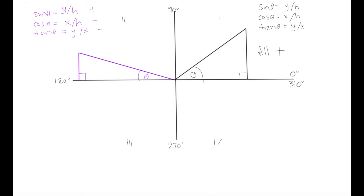So in quadrant 2, only sin theta is positive. It's worth noting that we also have three other trig functions — cosecant, secant, and cotangent. If sin theta is positive, cosecant theta, which is its reciprocal, is also positive. If cos and tan are negative, their reciprocal functions are also negative. But for simplicity, let's focus on our three main trig functions. So we note that sine is positive in quadrant 2.